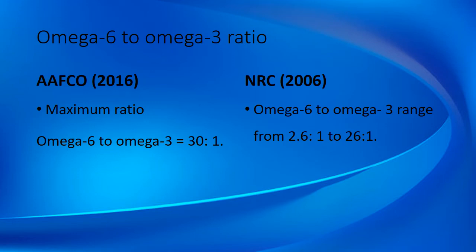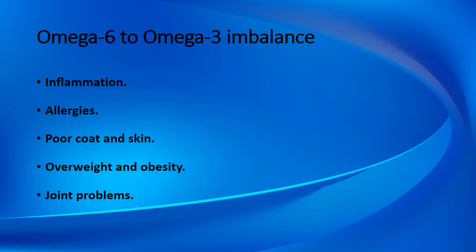Regarding the omega-6 to omega-3 ratio: according to AAFCO 2016, the maximum ratio of omega-6 to omega-3 is 30 to 1. According to NRC 2006, the omega-6 to omega-3 range varies from 2.6:1 to 26:1. If there is any imbalance in this ratio, it can lead to inflammation, allergies, poor coat and skin, and overweight or obesity, which can cause joint problems in your dog.